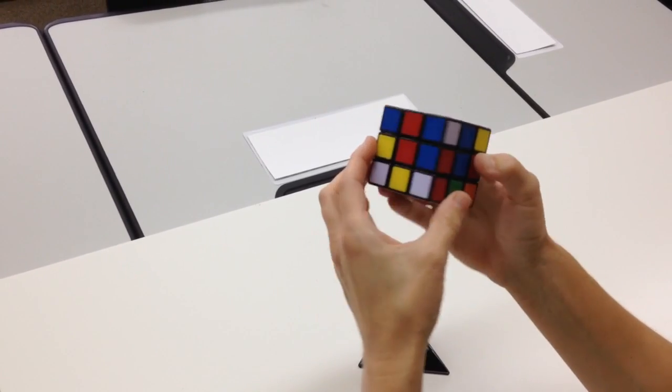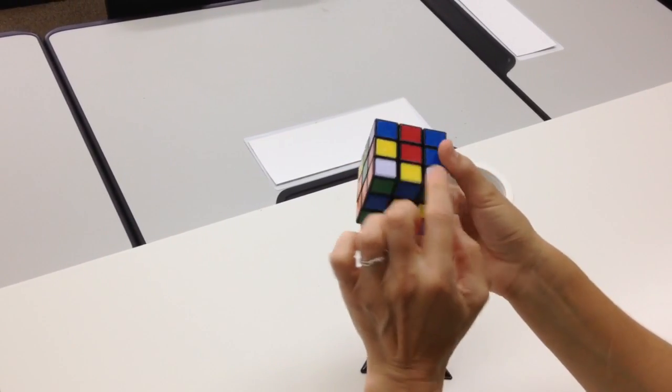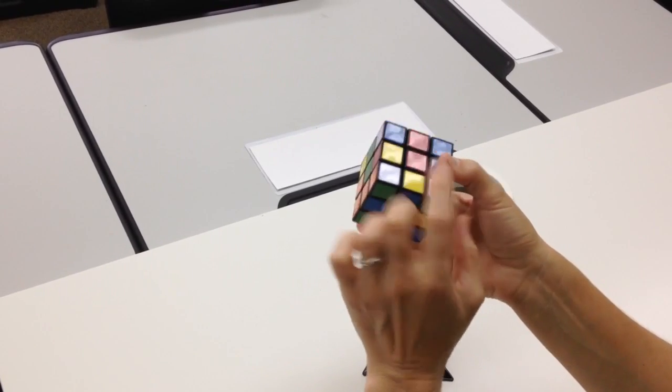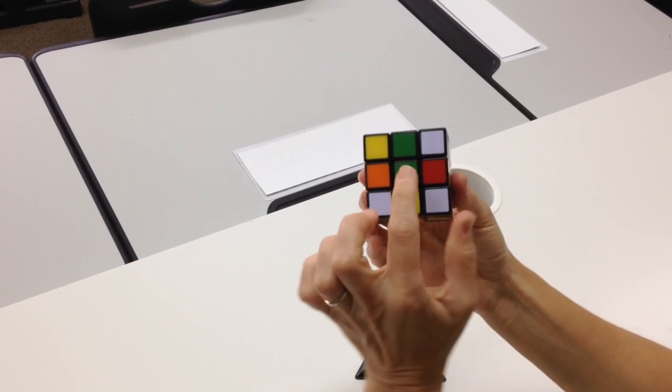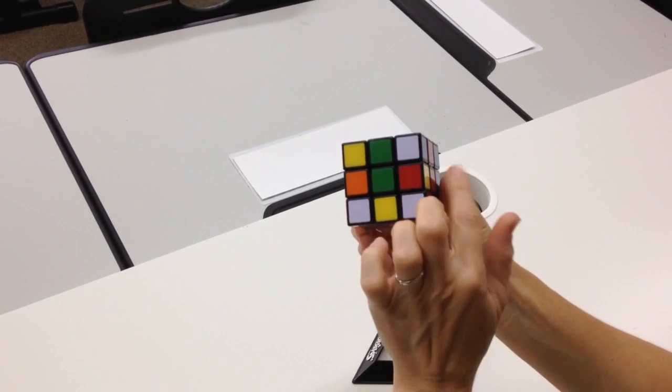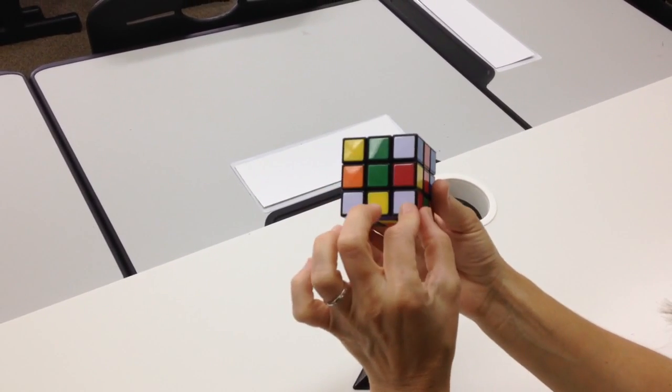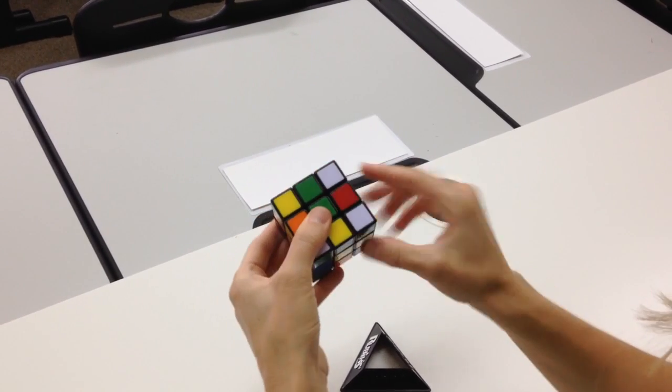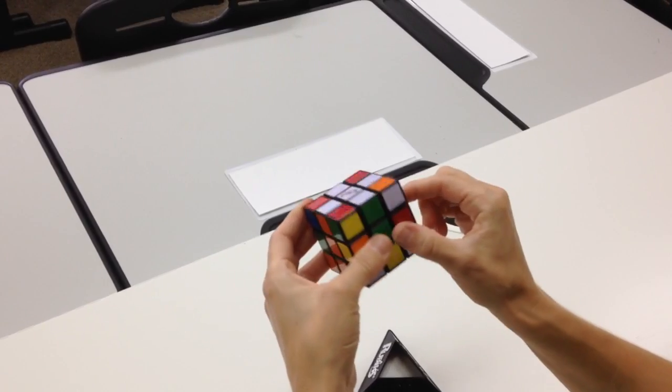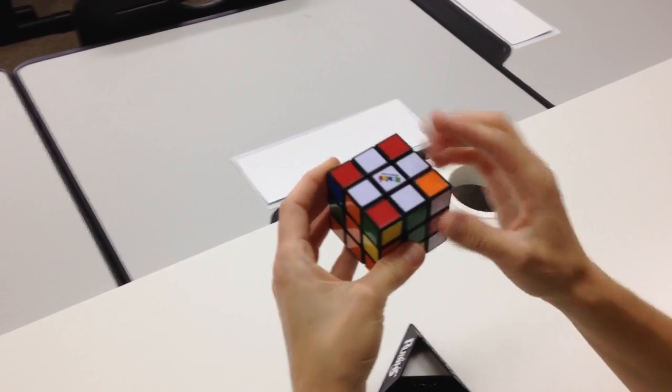The way we do that is find a white corner. I see I have a green, red, white piece. Move it to its street corner, which is between green and red, right in between. Now I'm going to hold it in my right hand with the green, red, white street corner right below the spot it goes in.